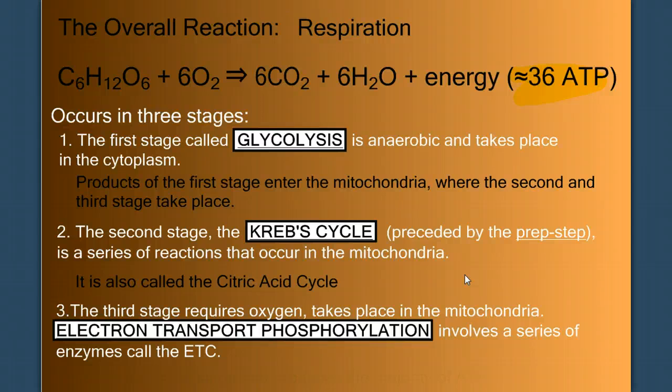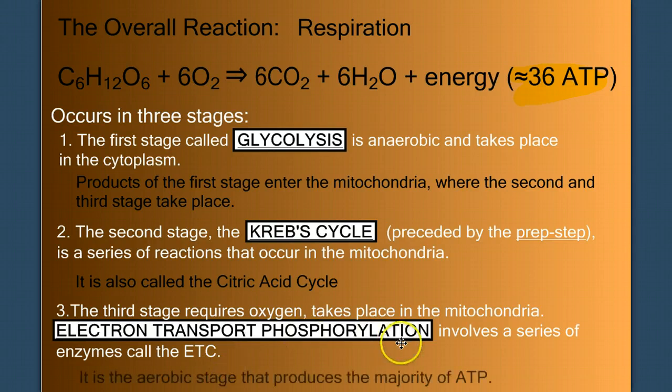It takes place deep inside the mitochondria. It's a series of enzymes embedded in the inner membrane called the electron transport chain. It's this stage of respiration that's aerobic and that will produce the majority of our ATP.